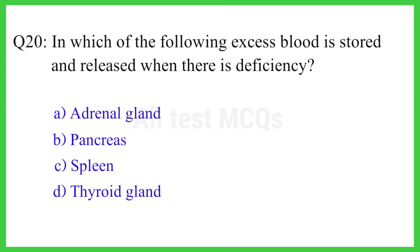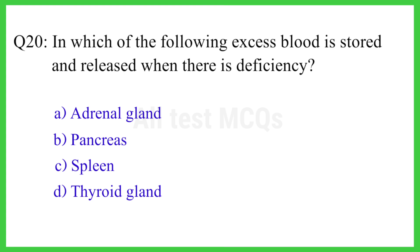Q20. In which of the following is excess blood stored and released when there is deficiency? The right answer is option C. Spleen.